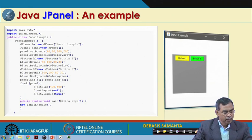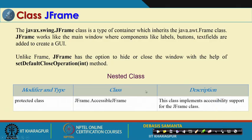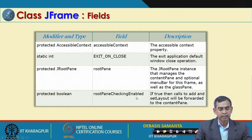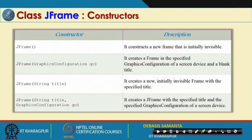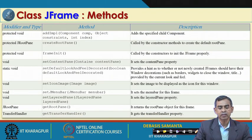Frame is a familiar concept from AWT and is the same here. It is a nested class defined inside the component class. It has fields like EXIT_ON_CLOSE and rootPane, and four constructors for different initialization options. A frame can be initialized with graphics for styling — color, background, etc. — or with a title, or both, or without any title. These are the constructors available for use in your program.